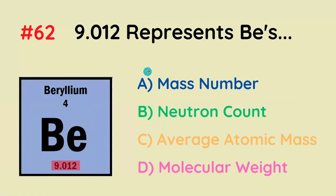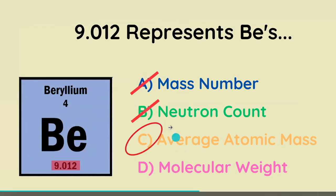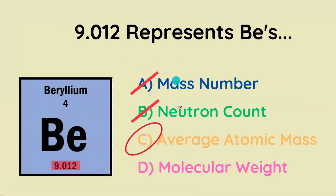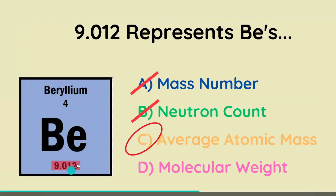9.012 represents beryllium's mass number, neutron count, average atomic mass, or molecular weight? It's not going to be the first two because those need to be whole numbers. It's going to be the average atomic mass — for any particular atom, this is the average value in AMU — and it's not the molecular weight because it's not a molecule.